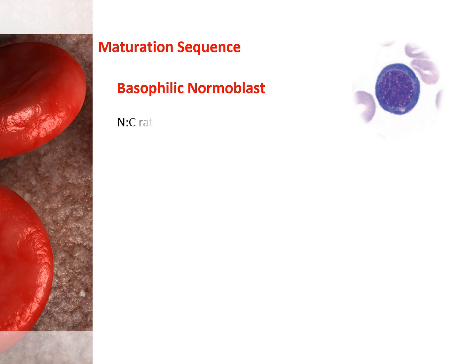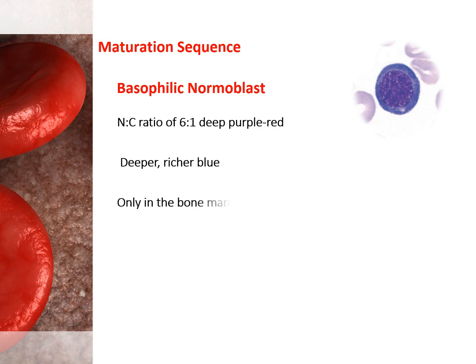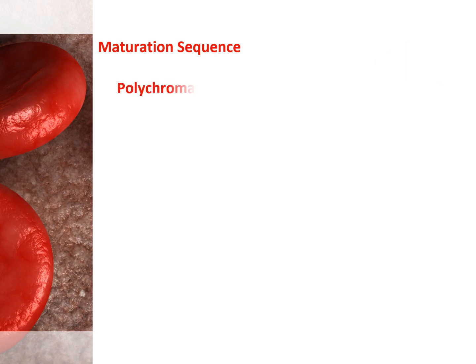Chromatin begins to condense and the nucleus-to-cytoplasm ratio decreases to about 6-to-1. The chromatin stains are deep purple-red. When stained, the cytoplasm may be a deeper, richer blue than in the pronormoblast. They are present only in the bone marrow. Detectable hemoglobin synthesis occurs. This stage lasts slightly more than 24 hours. The basophilic normoblast divides, giving rise to two daughter cells, and more than one division is possible before cells mature into the polychromatic normoblast.